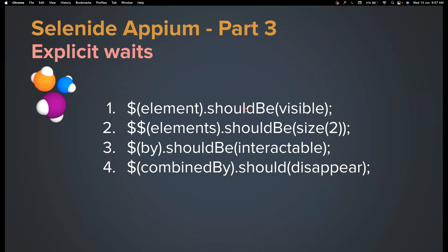Hi everyone, welcome back to my channel Testing Minibytes. I'm your friend Amudan Shakti, and in this video we're going to see how we can do explicit waits in Selenide. We've already used APM and we know how hard it is to use explicit waits — you need to write a lot of code and the code readability is definitely not great. With explicit waits from Selenide APM, your code will look much more readable.